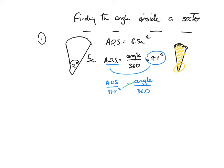Now I can cross multiply. Cross multiplication is when you've got a fraction equal to another fraction — for example, one half equals two quarters. The diagonals always multiply to give the same result: one times four is four, and two times two is four. So here: area of the sector times 360 is equal to the angle times pi r squared.